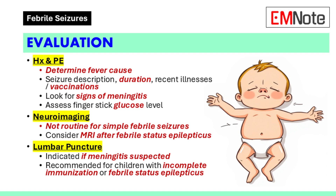Lumbar puncture is indicated in any child with physical examination findings suggestive of meningitis. It is an option for children between 6 and 12 months old with unknown or incomplete immunization status for Haemophilus influenzae type B and Streptococcus pneumoniae, and in children on antibiotics. Lumbar puncture may be considered in complex febrile seizures if the child is under 12 months of age or if the clinical examination suggests meningitis. It is recommended for all children with febrile status epilepticus due to higher rates of meningitis of 12% to 17% in studies.